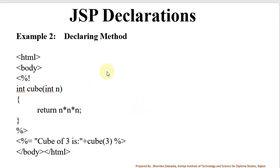This is how you can declare a method. Here I am creating one method 'cube' which will return the cube of the number n. Integer cube with argument n, it will return n raised to 3—n multiply by n multiply by n. Here I am calling this method. The cube of 3 will return the cube of number 3.